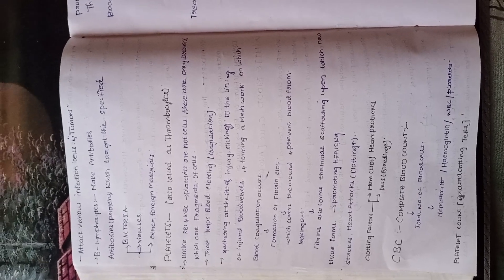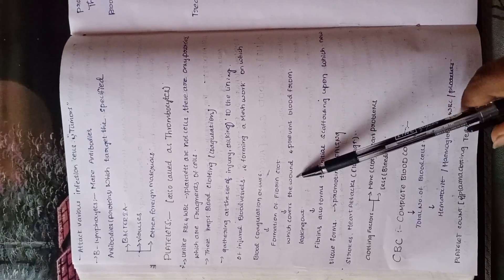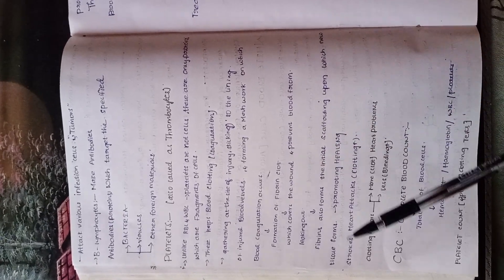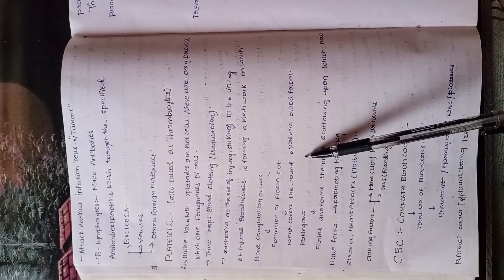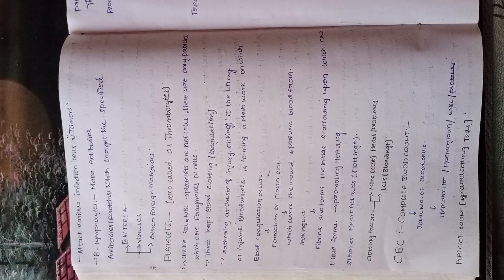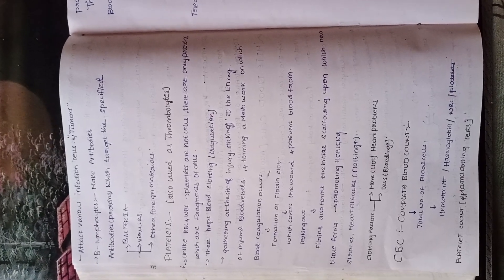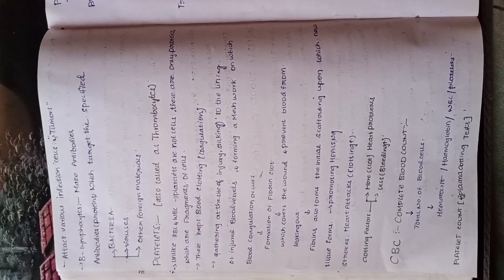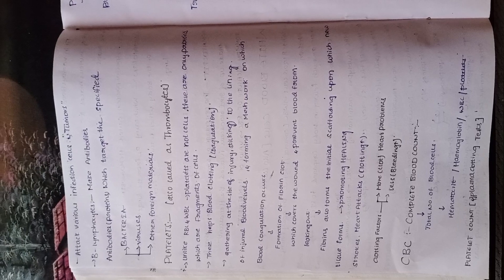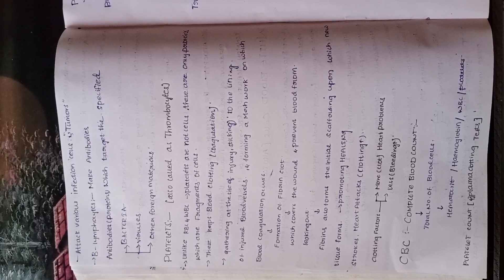Blood coagulation occurs at the injury site. Fibrin clots form which cover the wound and prevent blood from leaking out.